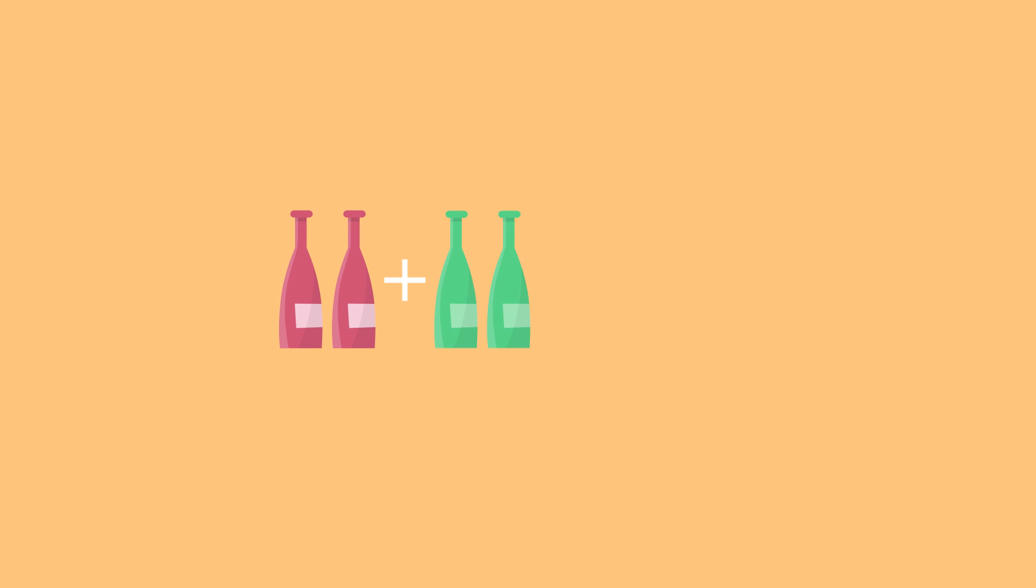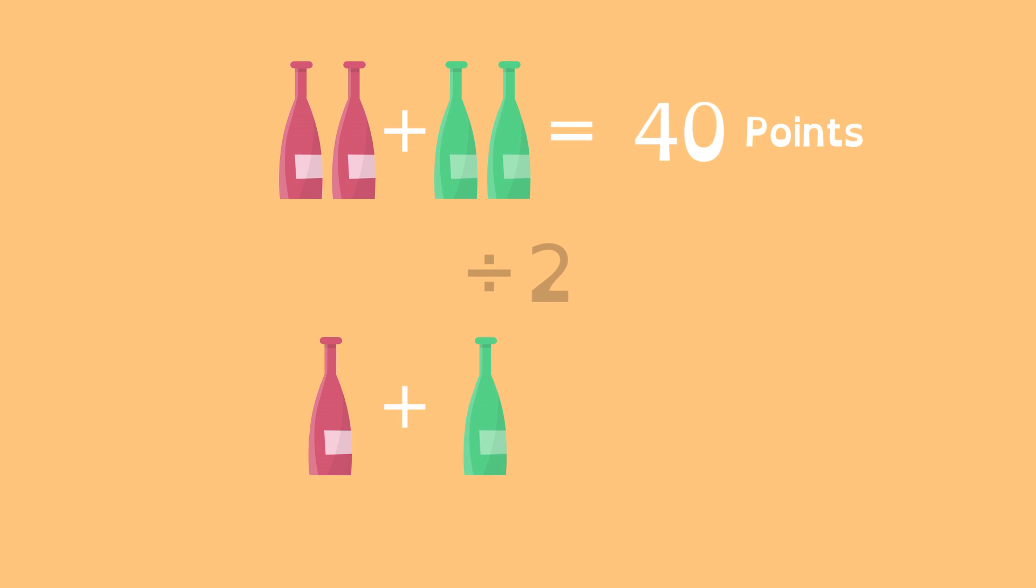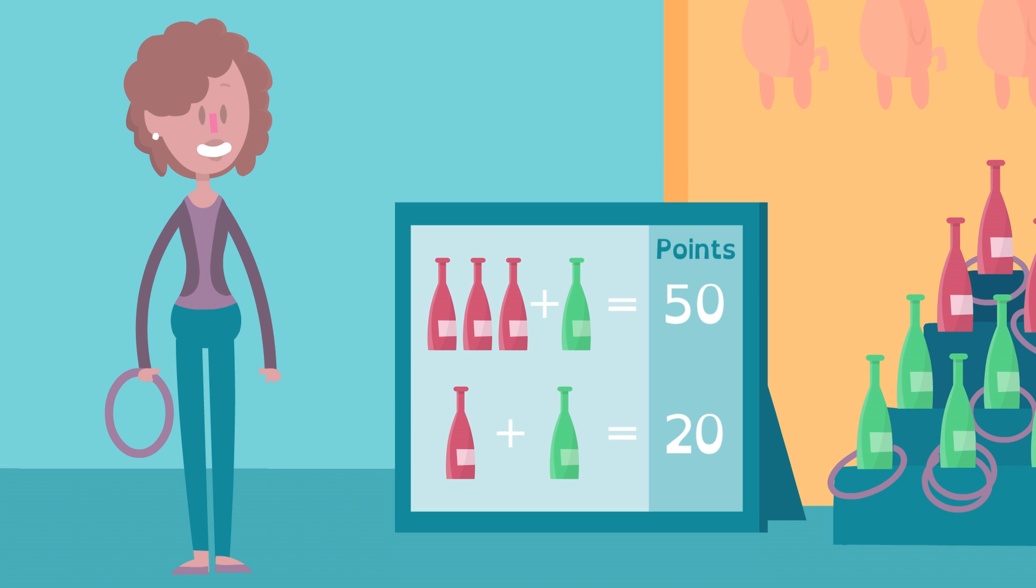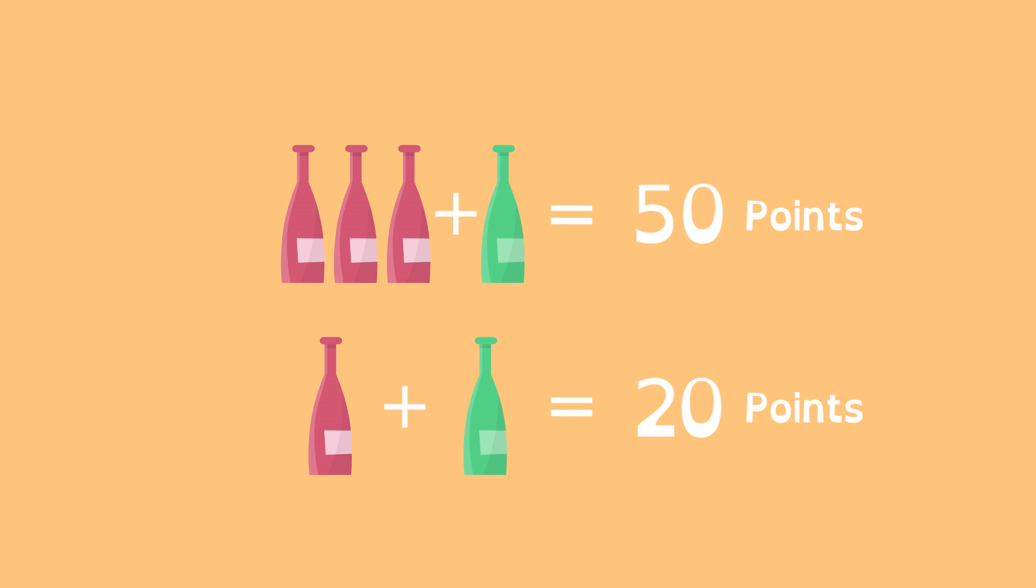If 2 red and 2 green are 40 points, then Kate can divide by 2 to find that 1 red and 1 green are 20 points. She's closer to knowing how many points each color is worth, but isn't there yet. She needs to work with the other equation.